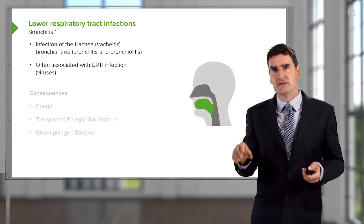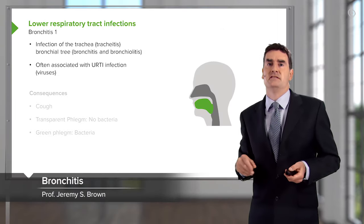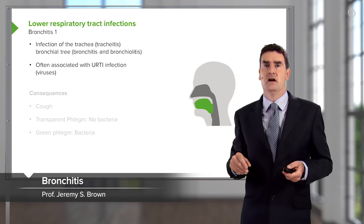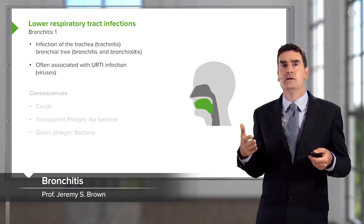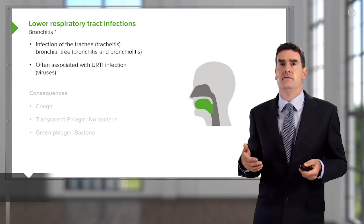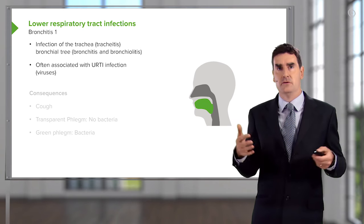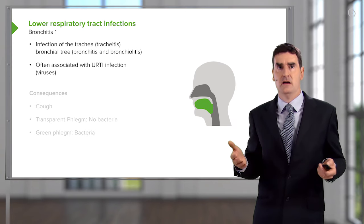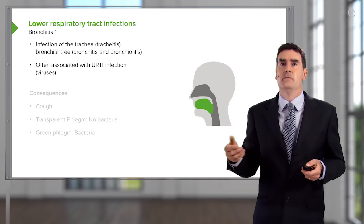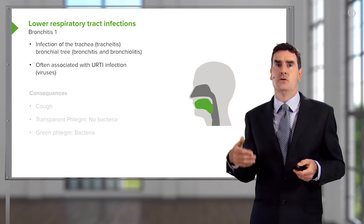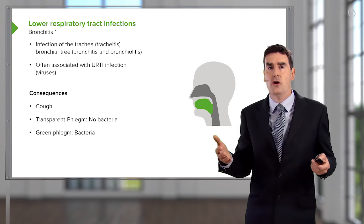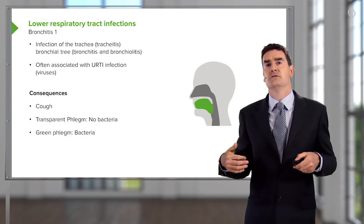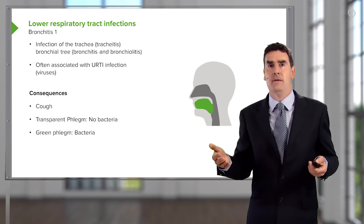Bronchitis is the first form of lower respiratory tract infection we're going to discuss. It's a bacterial or viral infection of the trachea or the bronchi that causes inflammation, and the consequence of that is that you cough and also produce phlegm.